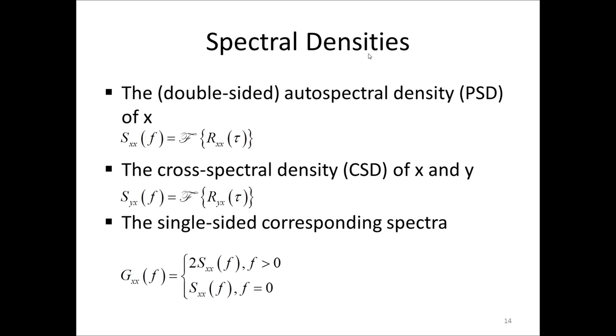The spectral density of a signal x of t is actually related to the autocorrelation R sub xx. The PSD is simply the Fourier transform of the autocorrelation function. The Fourier transform results in a double-sided spectrum, which we denote S sub xx, which then contains negative frequencies as well as positive. Similarly, for two signals, we can define the cross-spectral density CSD, also double-sided, as the Fourier transform of the cross-correlation.